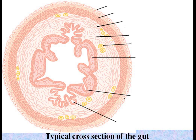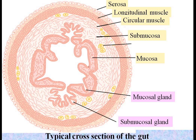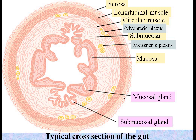This figure shows a typical cross-section of the gut. These basic layers are found throughout the gastrointestinal tract. The outermost layer is the serosa, followed by two muscular layers — the longitudinal muscles and the circular muscles. Muscle layers are followed by submucosa, and the innermost layer is mucosa. Submucosa has the submucosal gland and mucosa has the mucosal gland. The gastrointestinal tract has a branching network of nerves called plexuses — the myenteric plexus is present between the longitudinal and circular muscles, while the Meissner's plexus is found in the submucosa.